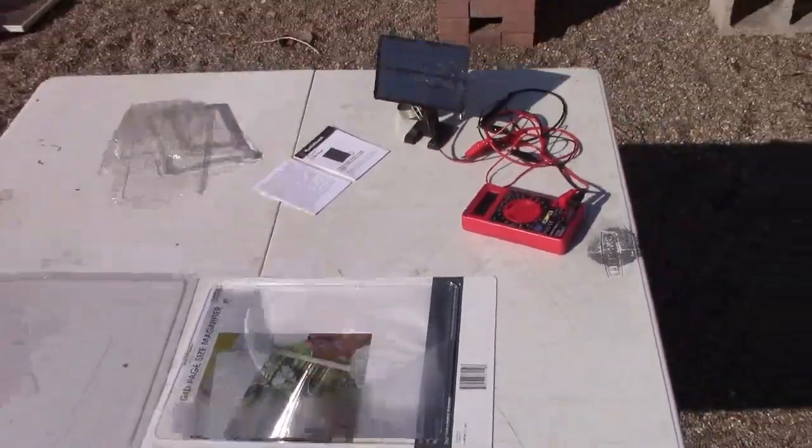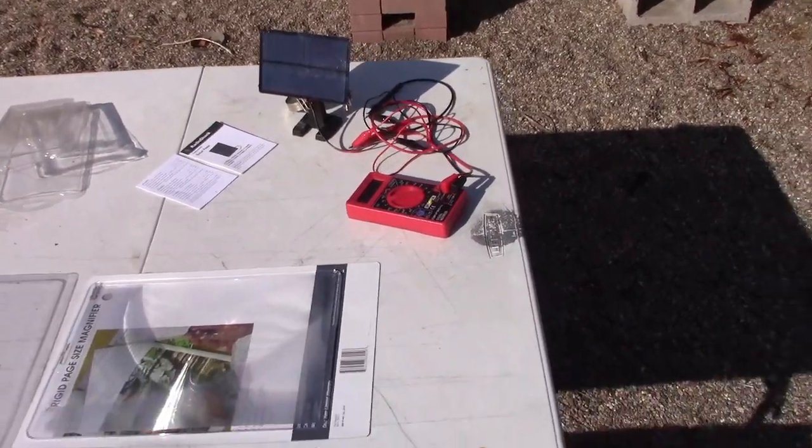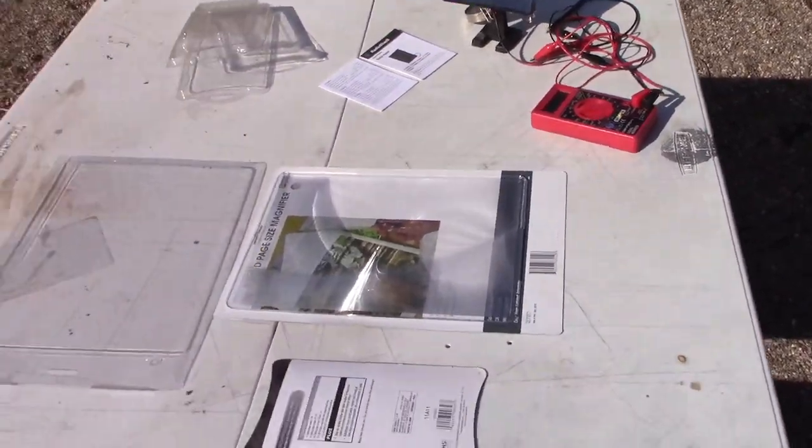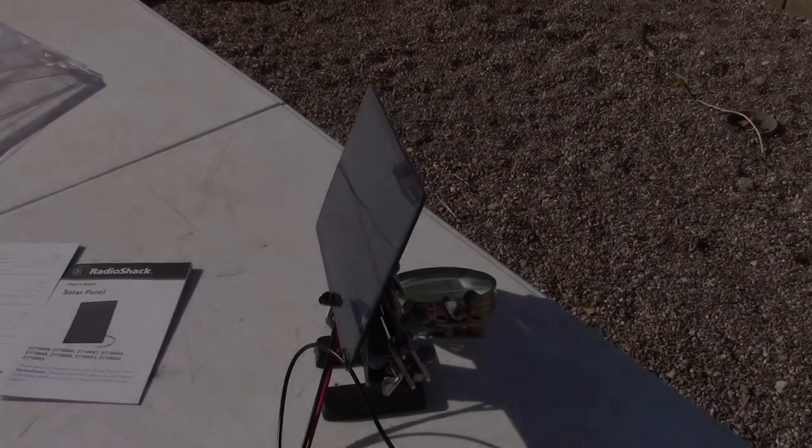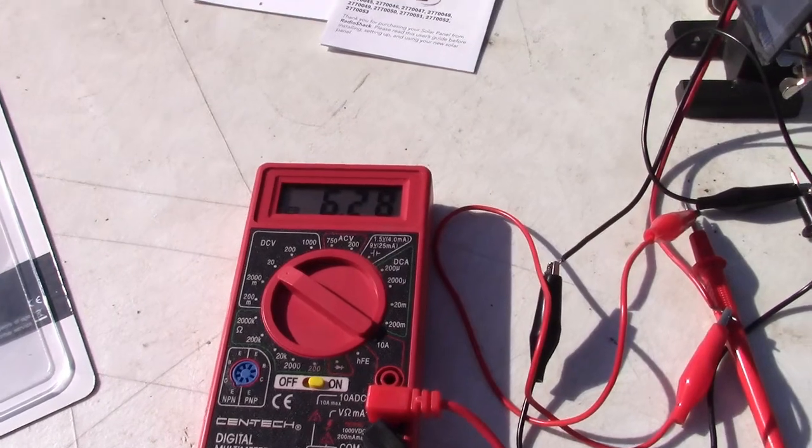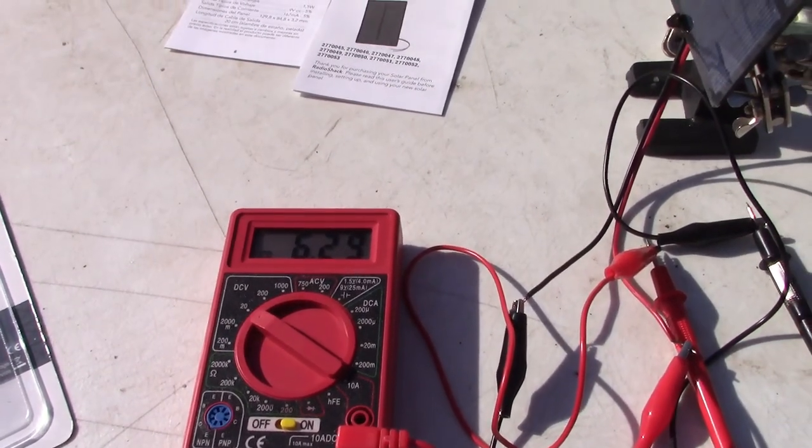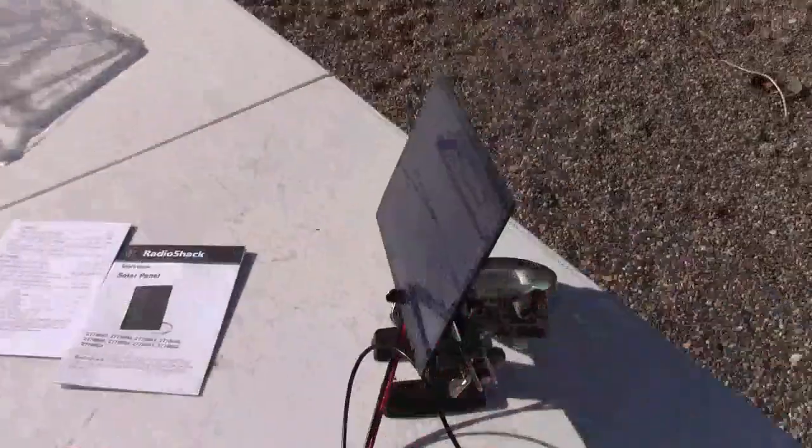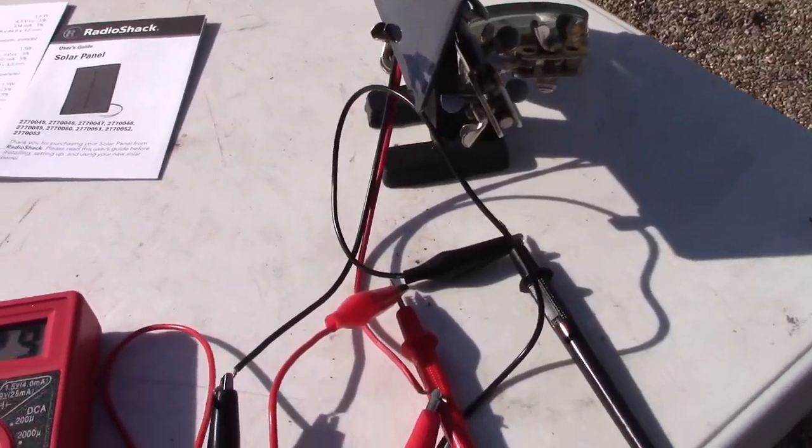Then I'll add the small Fresnel lens and point it at that, and we'll take some readings at that point as well. So right now I've got it hooked up, it's on voltage, 6.29 volts without the lens.